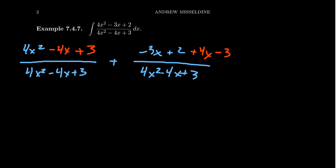And so when you go about doing that, this thing will simplify to be 1 plus, you get 4x minus 3x, that's just x, and then negative 3 plus 2, which is minus 1. This sits above our denominator, 4x squared minus 4x plus 3.